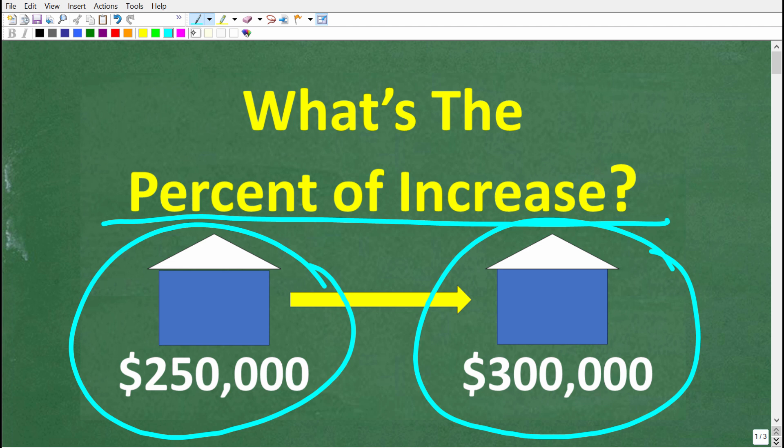So we have a home that went from $250,000 in value up to $300,000. We're trying to determine the percent of increase on the original price. Now, feel free to use a calculator, but I'm going to suggest try to figure this out without using a calculator. Either way, go ahead and put your answer into the comment section. I'm going to show you the correct solution in just one second, and then of course I'm going to solve this problem step by step.